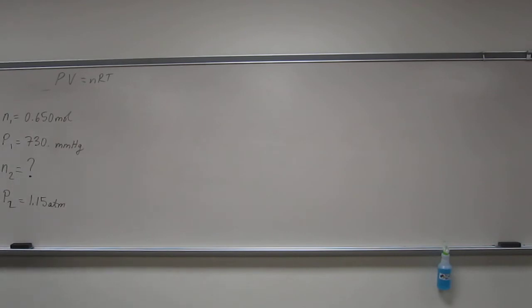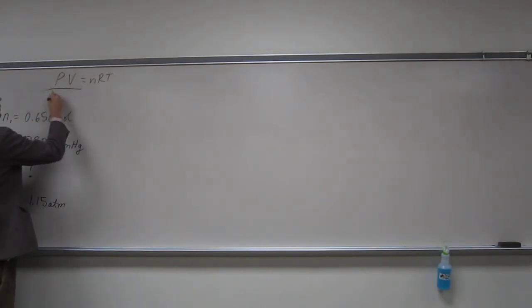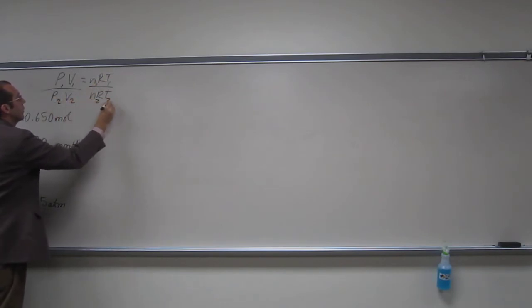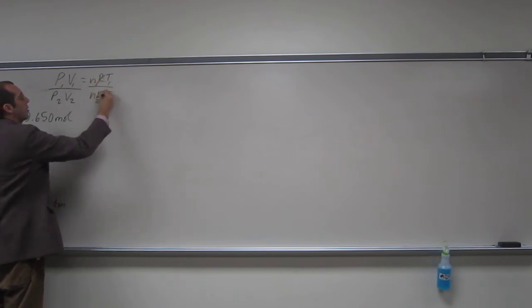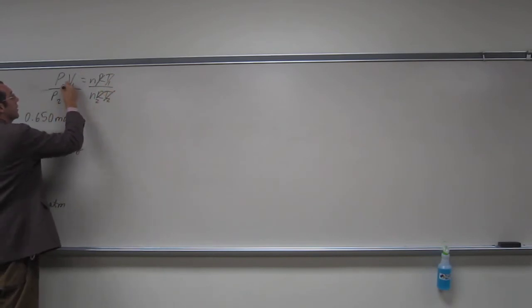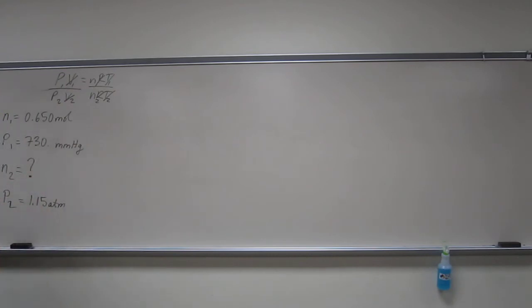So, hopefully you guys can see that the number of moles is changing and the pressures are changing. So, that means we're going to take PV equals nRT and divide it by PV equals nRT. We put little ones at the top, twos at the bottom. Remember, R never changes, so that cancels out. In this case, the temperature has stayed the same, so that cancels out. And the volume has stayed the same because it's in a gas cylinder.